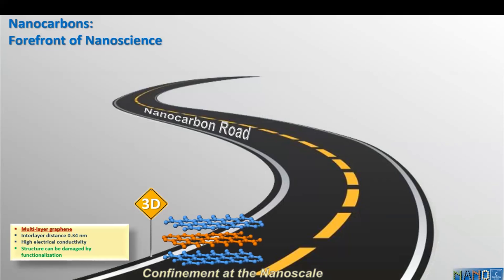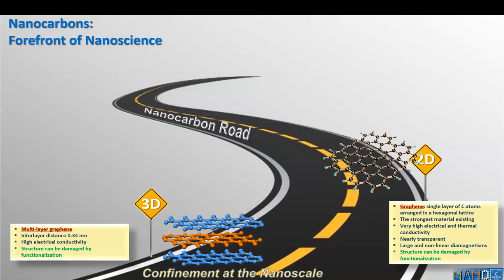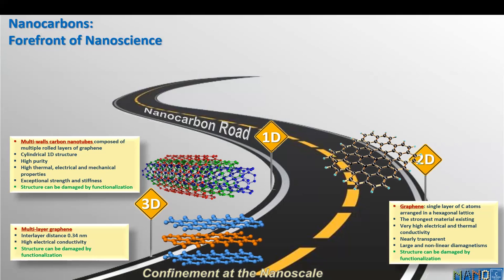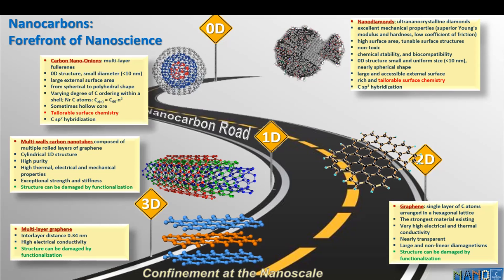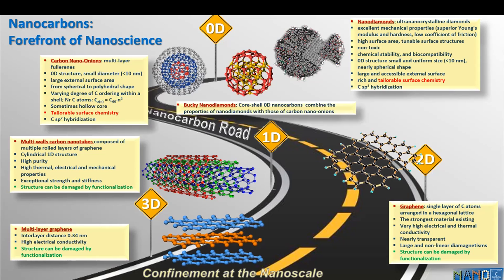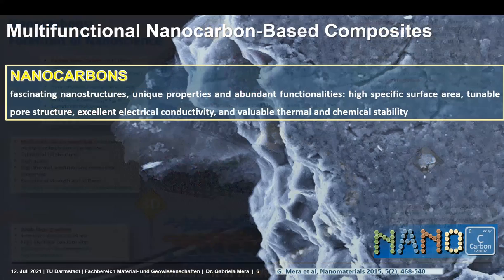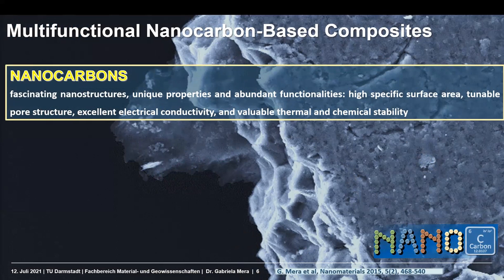Now, if we look at the nanocarbon road, I pick up a few examples of confined nanocarbons—so low-dimensional nanocarbons. We can find three-dimensional multi-layer graphene (so not graphite), two-dimensional graphene, one-dimensional carbon nanotubes as single and multi-walled nanotubes, as well as a very exciting class of materials: zero-dimensional nanocarbons represented by the sp3-hybridized nanodiamond of five nanometer particle size, and the analogous sp2-hybridized carbon nano-onion, as well as mixtures of both—a core-shell structure composed of a nanodiamond core and a fullerene shell, named Bucky nanodiamond. As you have seen on this slide, nanocarbons can have fascinating nanostructures, and not only that, they show unique properties and functionalities.